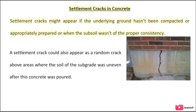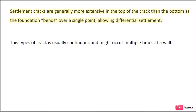Settlement cracks might appear if the underlying ground hasn't been compacted or appropriately prepared, or when the subsoil wasn't of the proper consistency. A settlement crack could also appear as a random crack above areas where the soil of the subgrade was uneven after the concrete was poured. Settlement cracks are generally more extensive at the top of the crack than the bottom, as the foundation bends over a single point allowing differential settlement. This type of crack is usually continuous and might occur multiple times at a wall.